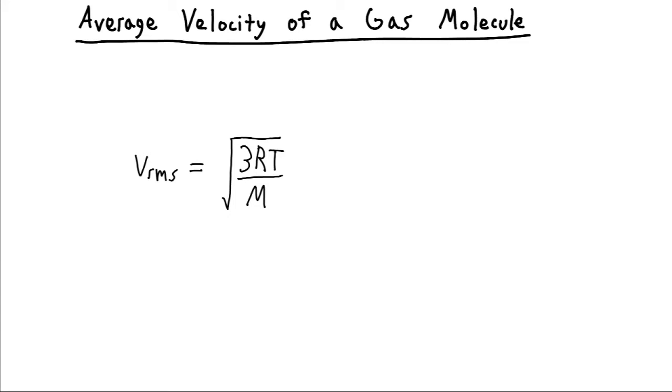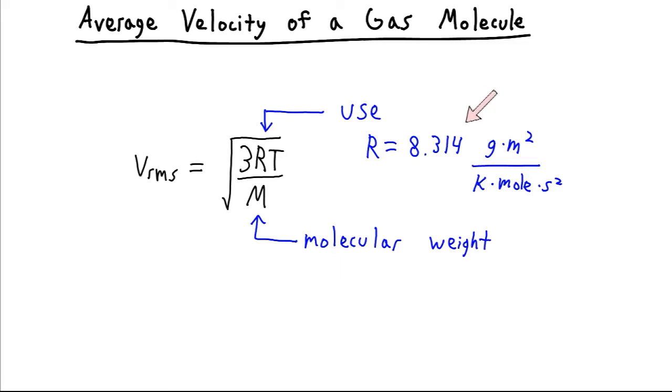Now a note about R here. We're going to use a slightly different R from what we've been using. We're going to use R equals 8.314 grams times meters squared, divided by kelvins, moles, seconds squared. This constant is technically the same value. We've just changed the units on it so that they will cancel out with the units we have here with our molecular weight and our temperature, so that we get a velocity in the end.